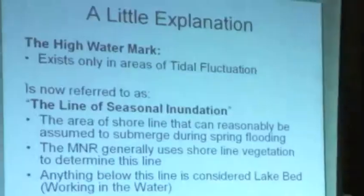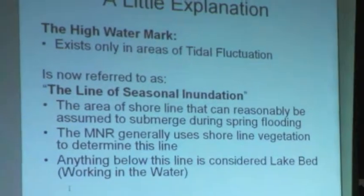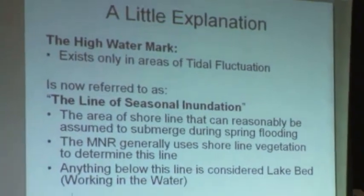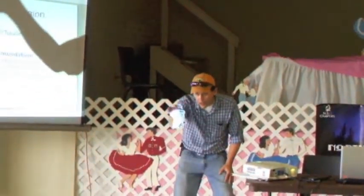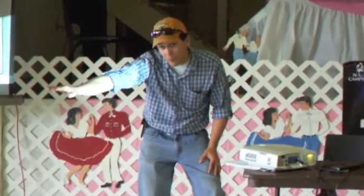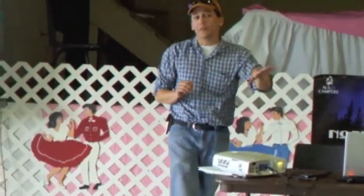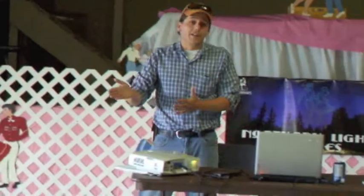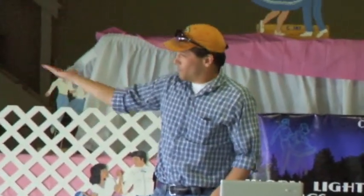What everybody considers the high watermark is now referred to as the line of seasonal inundation. The high watermark is solely used in areas of tidal fluctuation, which applies out on the island because we have a little bit of tidal flux with the North Channel. The line of seasonal inundation is the area of shoreline that can reasonably be assumed to submerge during spring flooding. The MNR generally uses shoreline vegetation to determine this line — looking for where the vegetation on one side is mostly aquatic and on the other side is mostly terrestrial. That's the guideline.